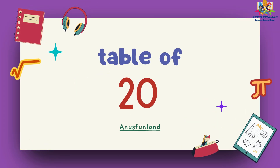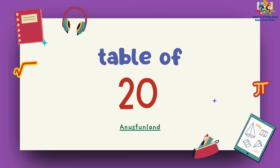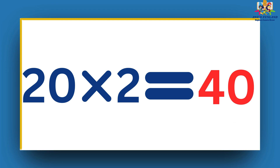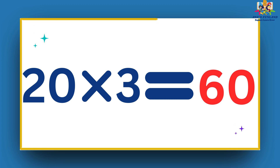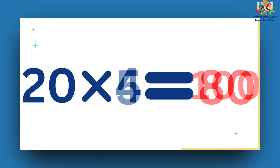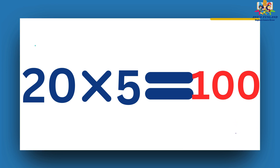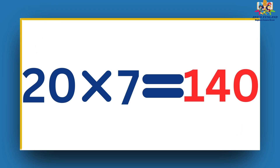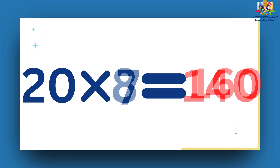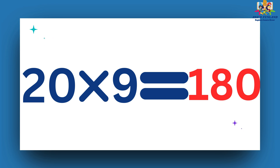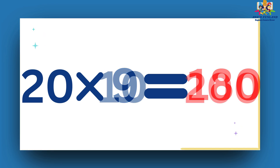Now we will learn table of 20. 20 ones are 20. 20 twos are 40. 20 threes are 60. 20 fours are 80. 20 fives are 100. 20 sixes are 120. 20 sevens are 140. 20 eights are 160. 20 nines are 180. 20 tens are 200.